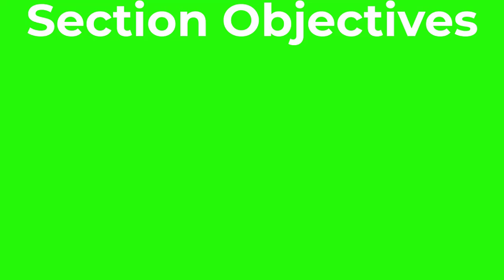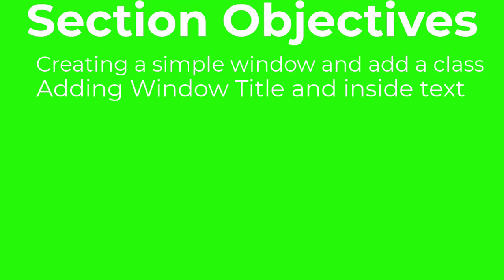Here is what we shall be doing in this section. The first thing, we are going to create a simple window using a class. After doing so, we are going to add text to the title of that window and also put some text inside the window.